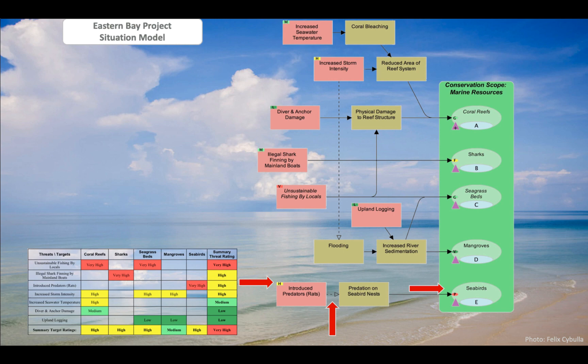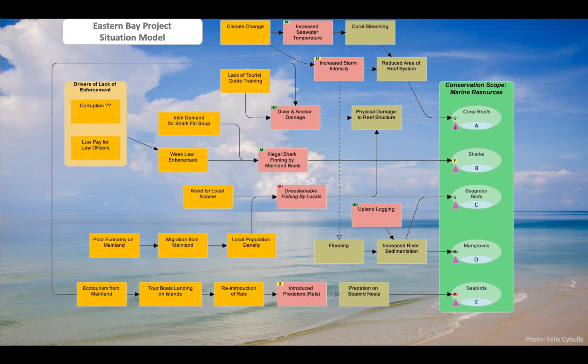For example, the team was uncertain if the introduced predators are the cause of the seabird nest predation, and we'll need to gather more information to be confident of that. To complete the situation model, we identify and illustrate the contributing factors that we assume are leading to our direct threats. These are depicted with the orange boxes here. For example, the team assumes that it is ecotourism boats from the mainland that are reintroducing the rats into this project area.